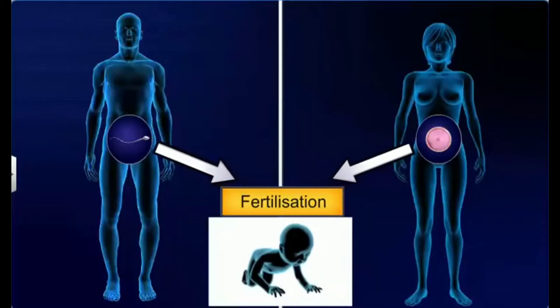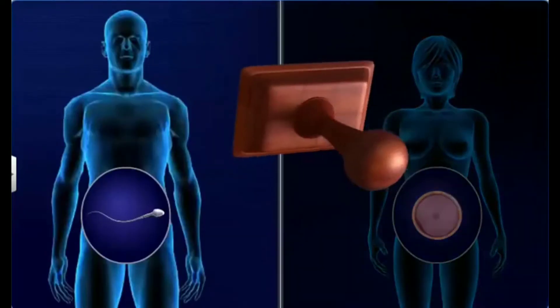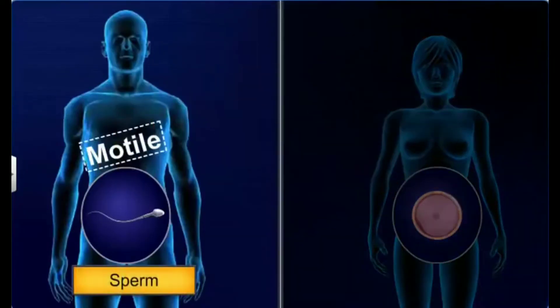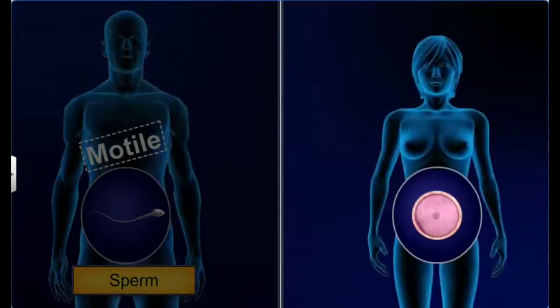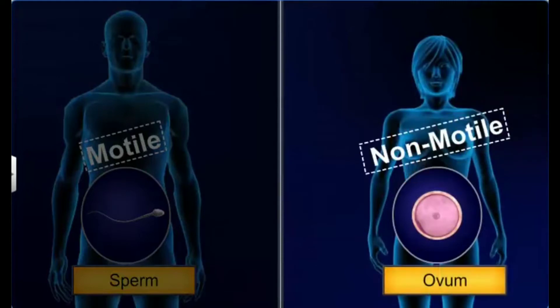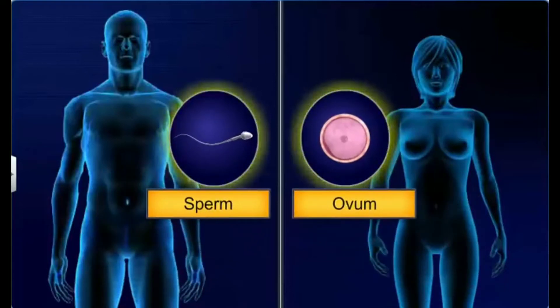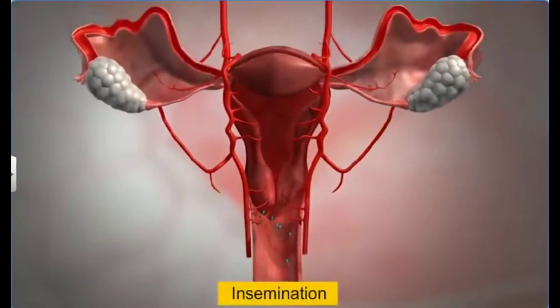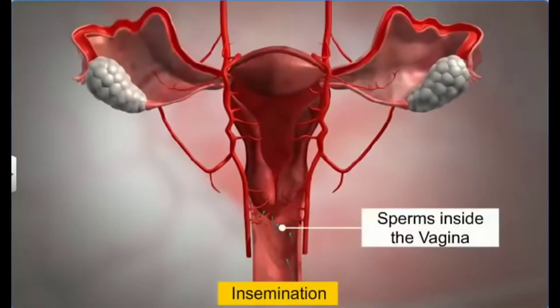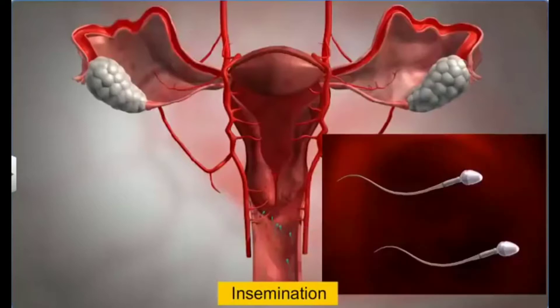Fertilization, or fusion of gametes, is the most vital event in the process of sexual reproduction, as it results in new life. In humans, while the male gamete or sperm is motile, the female gamete or ovum is non-motile. Therefore, for fertilization to occur, the two gametes must be brought together.